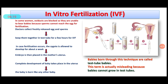There is a problem in human beings. In certain females, the oviduct is blocked. Because of this, the sperms will not be able to pass through the oviduct and reach the egg. In such females, fertilization does not take place and they are not able to give birth to a baby.